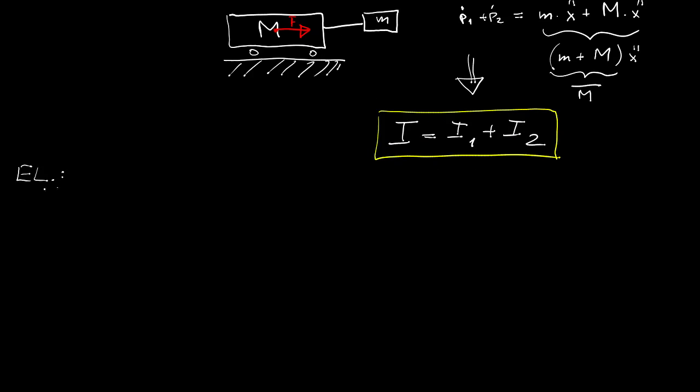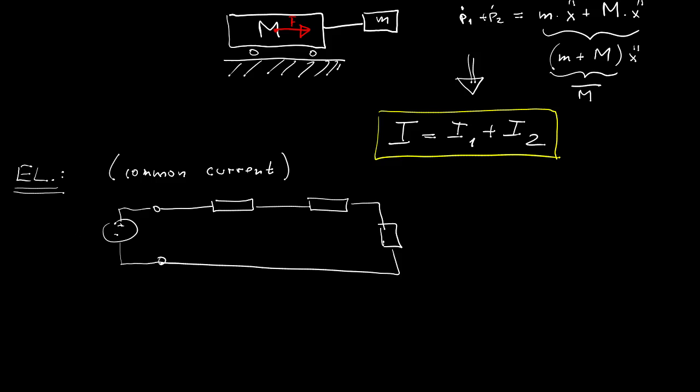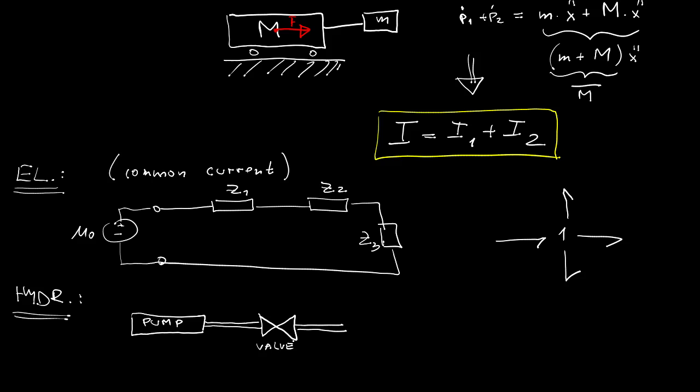Now let's have a look at an example in electrical domain. Recall that here type 1 junction means that we have a common current which in electrical domain can be represented like this. So three impedances in series, again type 1 junction with four bonds. For those of you familiar with electronics, this is the standard Kirchhoff's voltage law.